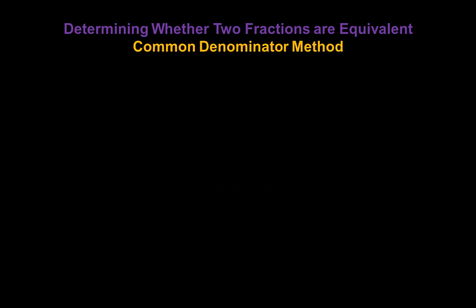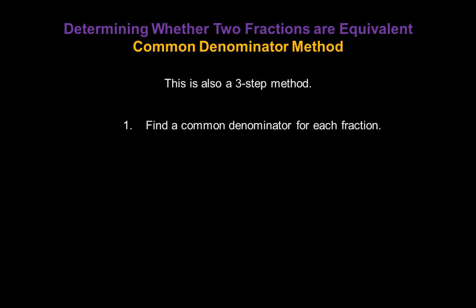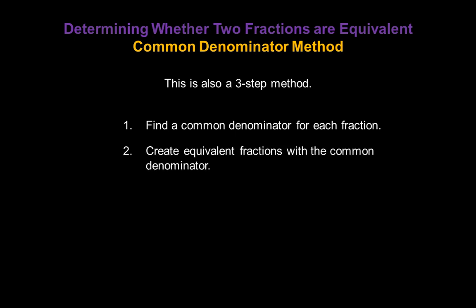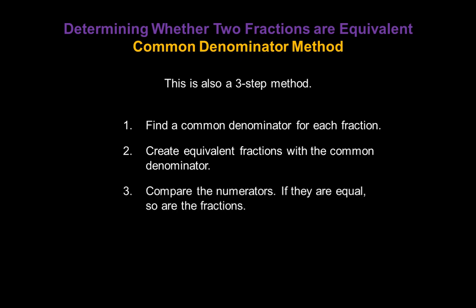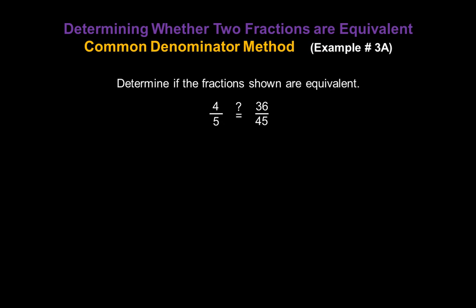Let's move on to the second method: the common denominator method. This is also a three-step method. Step one: find a common denominator for each fraction. Step two: create equivalent fractions with that common denominator. Step three: compare the numerators — if they are equal, so are the fractions. We're going to use the same fractions: check if 4 fifths is equivalent to 36 over 45.